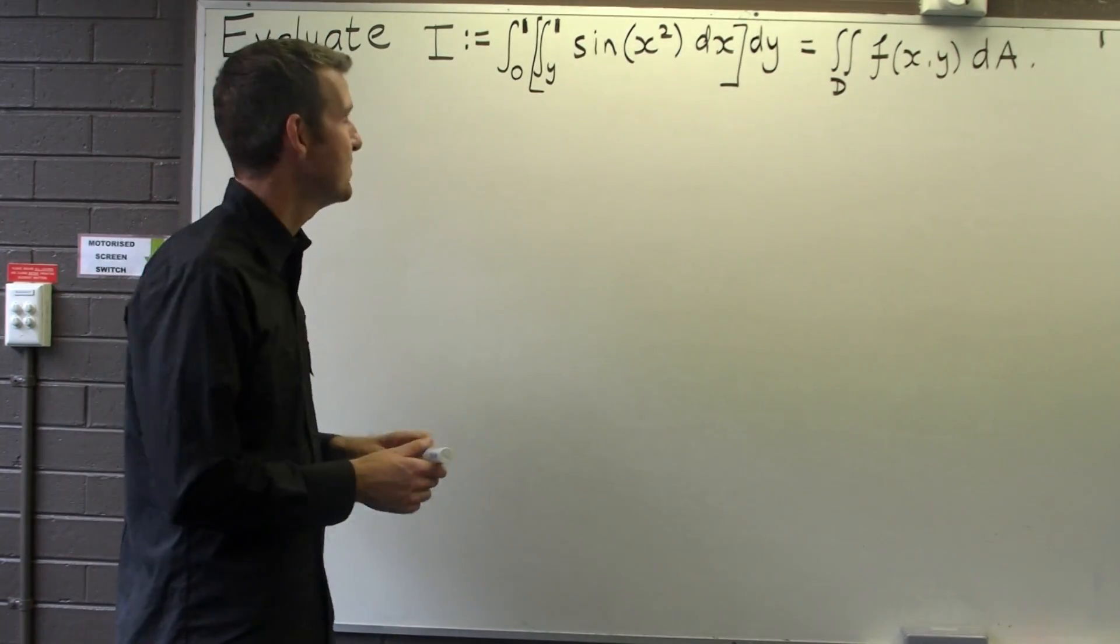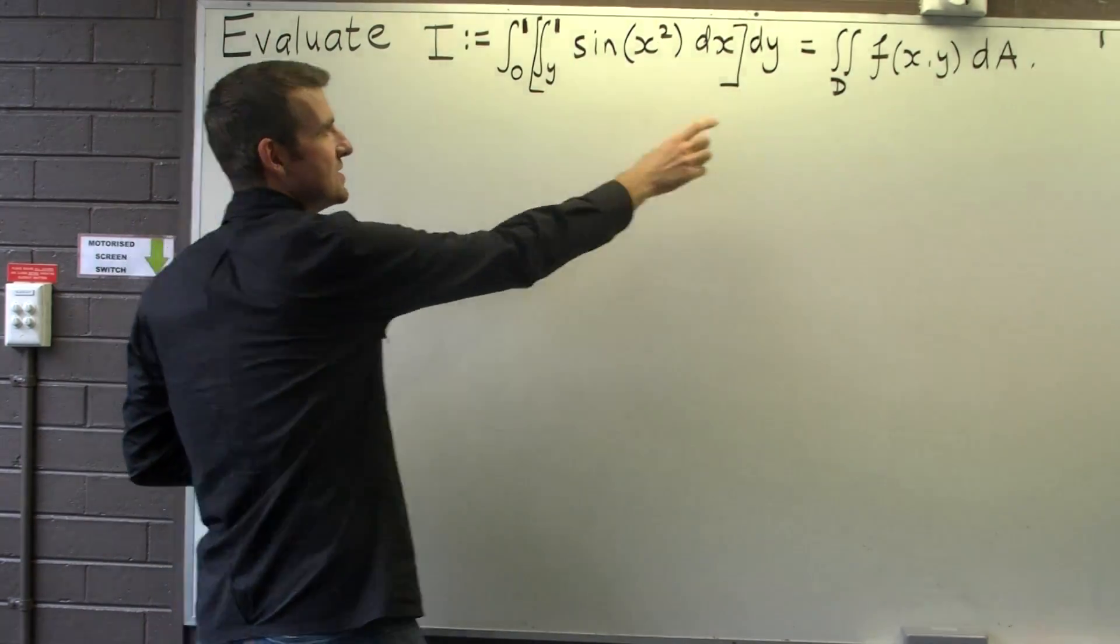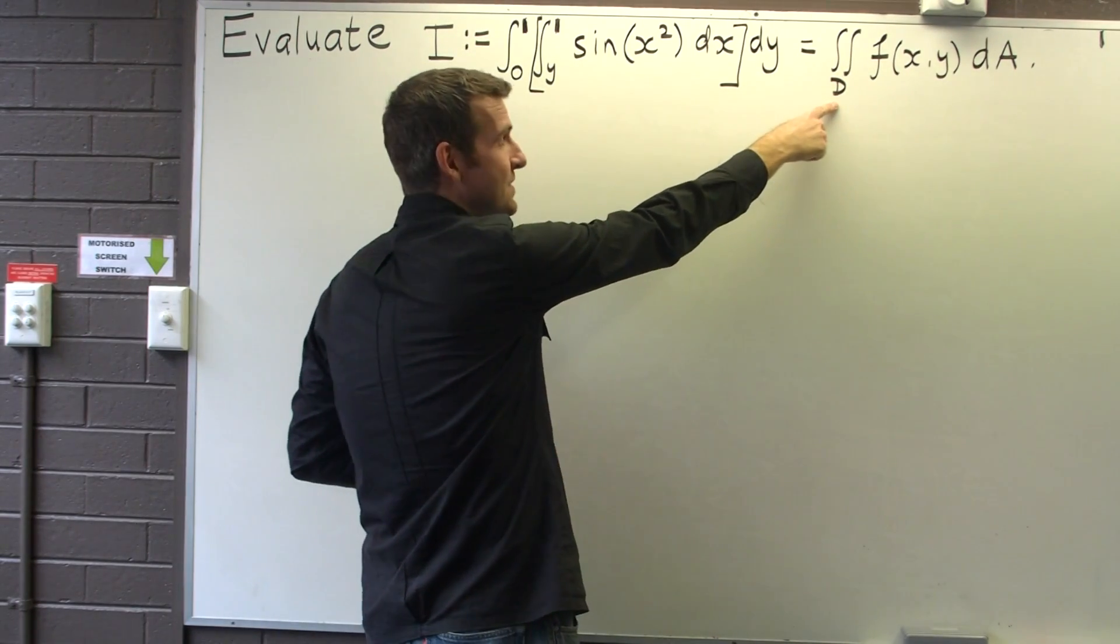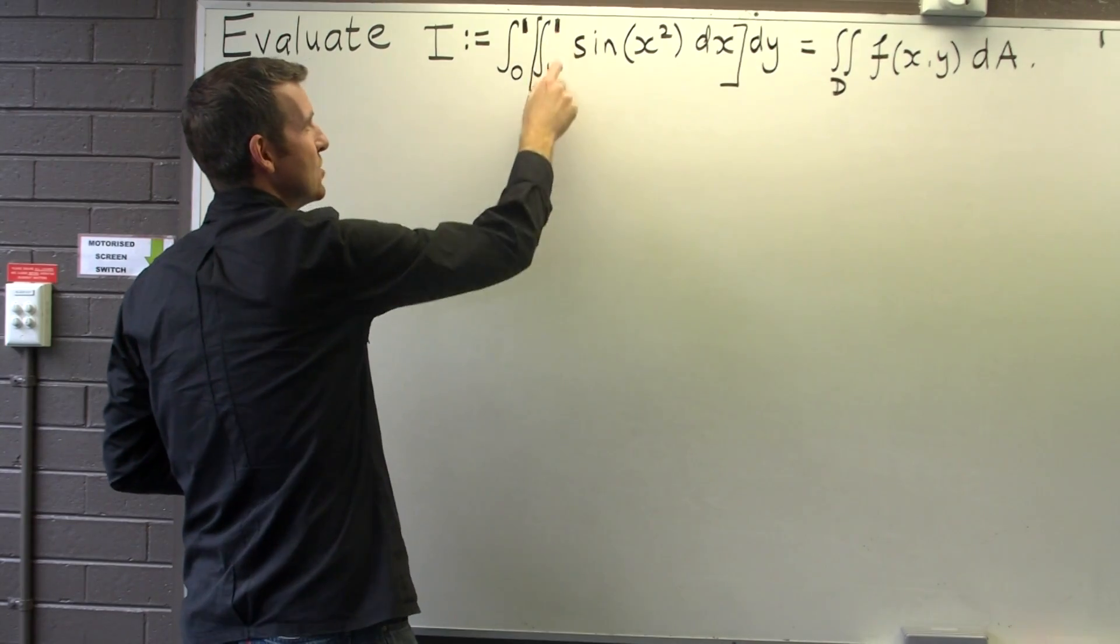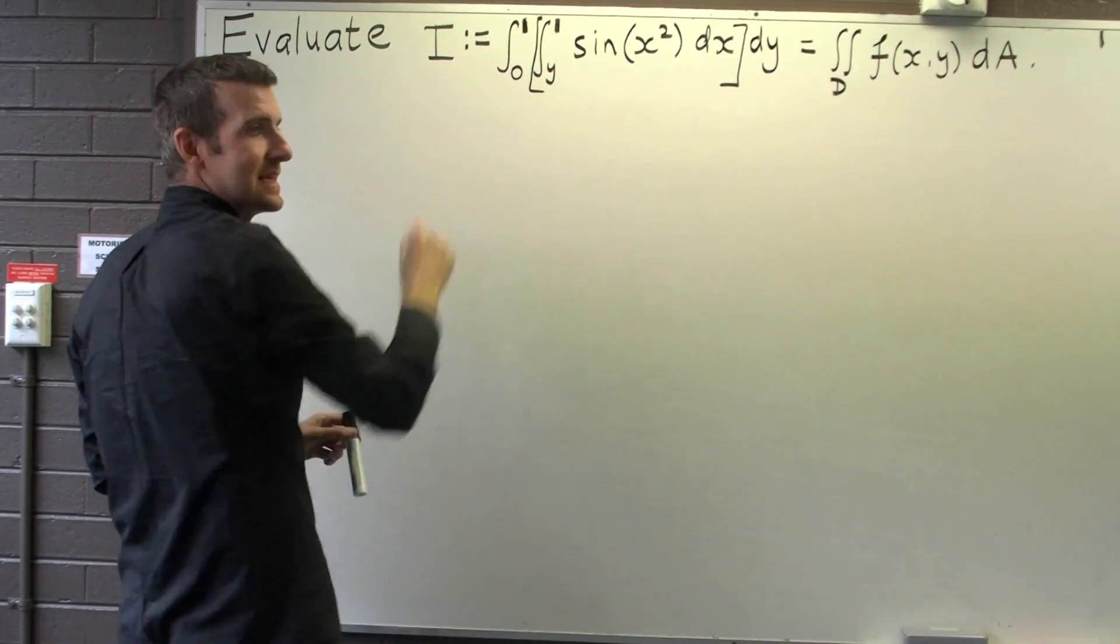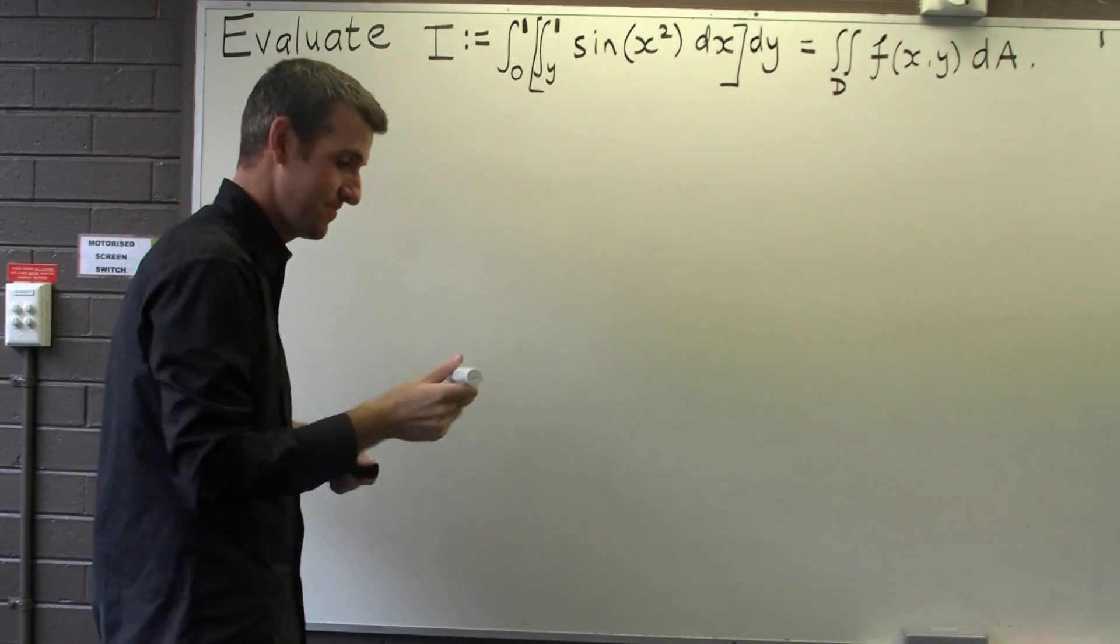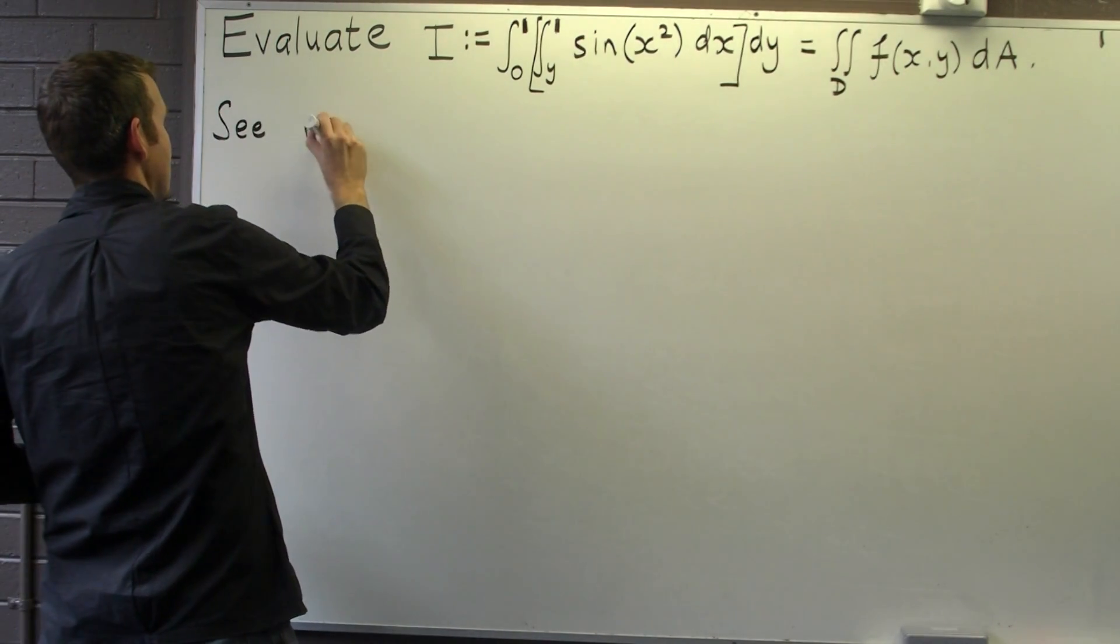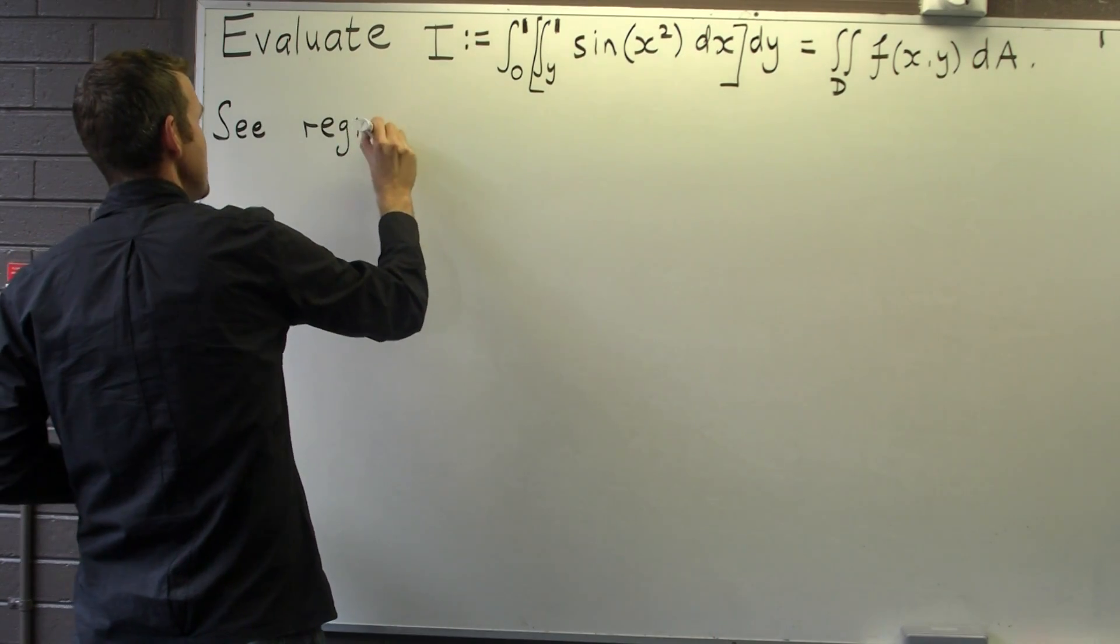So how do we do that? Well, essentially what we're going to do is re-describe our region D and consequently there'll be a change in our limits of integration up here.